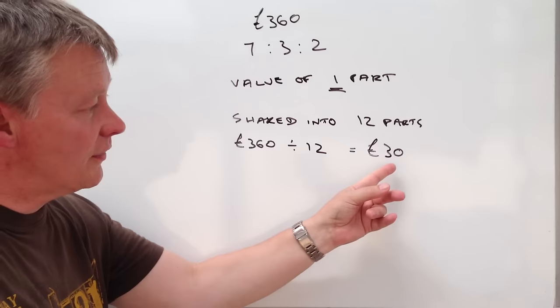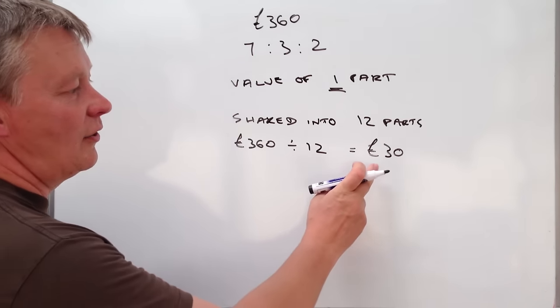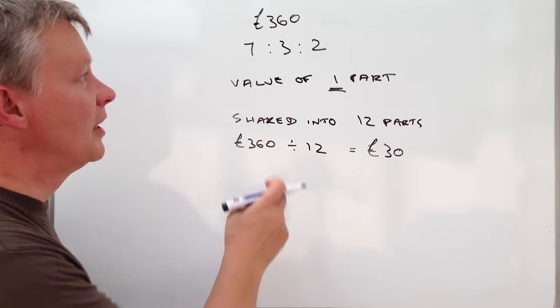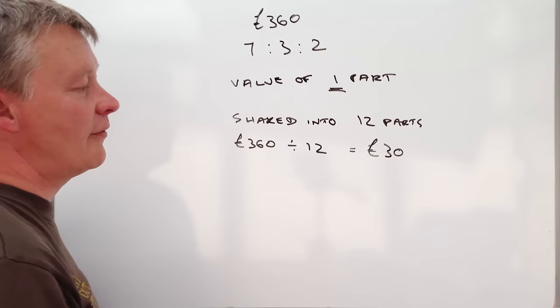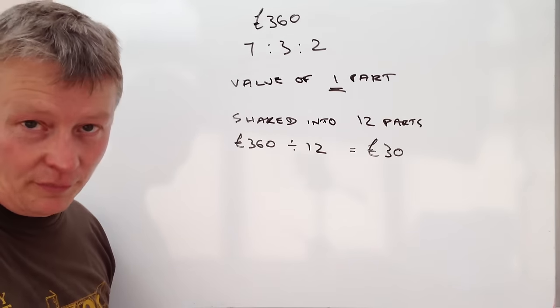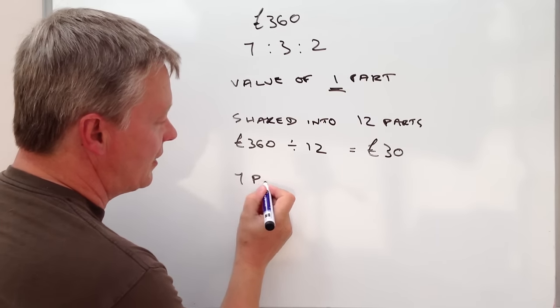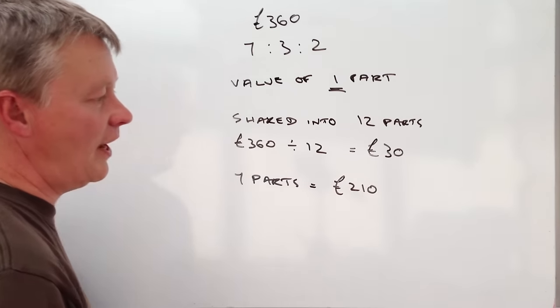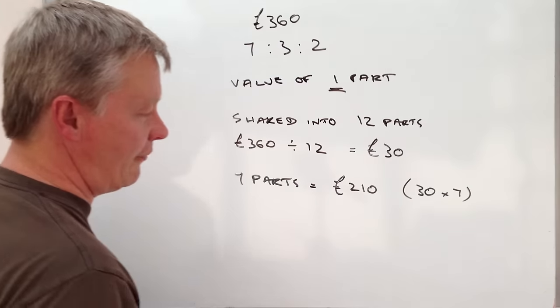And then it's really just a case of using that number in each of those. So, I can say the person who got two parts got £60, the person who got three parts got £90, the person who's seven parts got £210. So, in order to answer the question, seven parts equals £210, because that is the equivalent of £30 times seven.